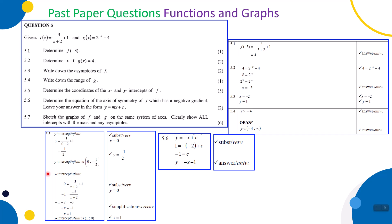Good day Grade 11 mathematics learners and welcome to our third session for our June examination preparation for paper 1. In our next question we're going to look at functions and graphs. In the first two sessions we mainly did algebra and then number patterns. For question 5, given f(x) = -3/(x+2) + 1 and g(x) = 2 to the exponent of negative x minus 4.